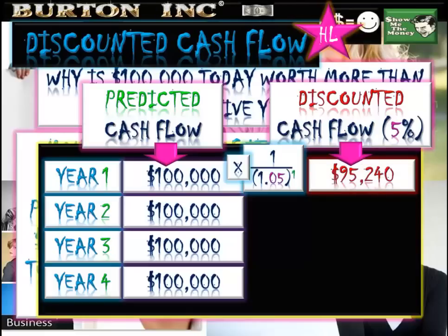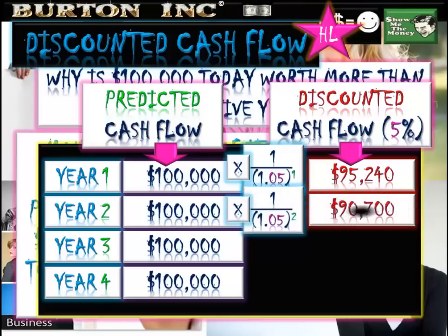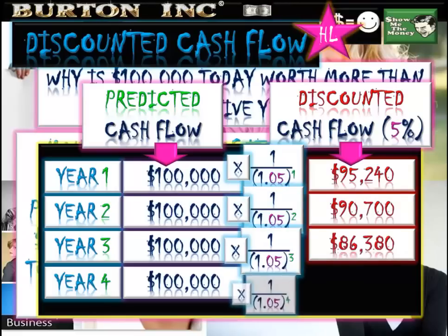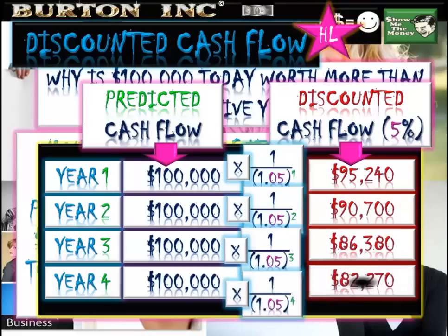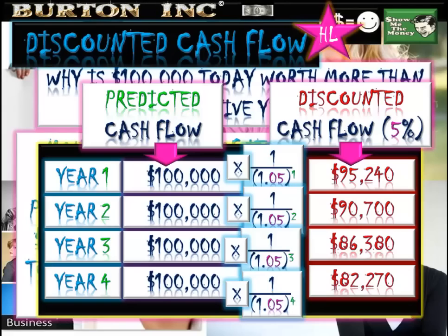We never discount in year zero or the first year of an investment — there's no need as we're discounting into the future. The formula becomes a lot clearer: we've got the discounted cash flow factor, and the exam will tell you which rate to discount by. We raise that figure by whichever year we're looking at — quite easy.